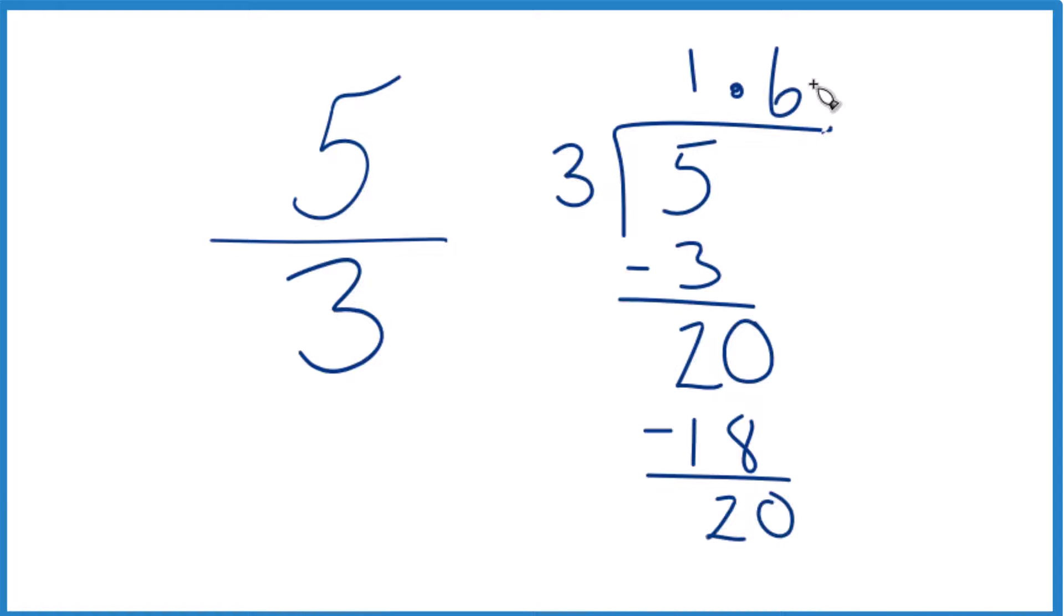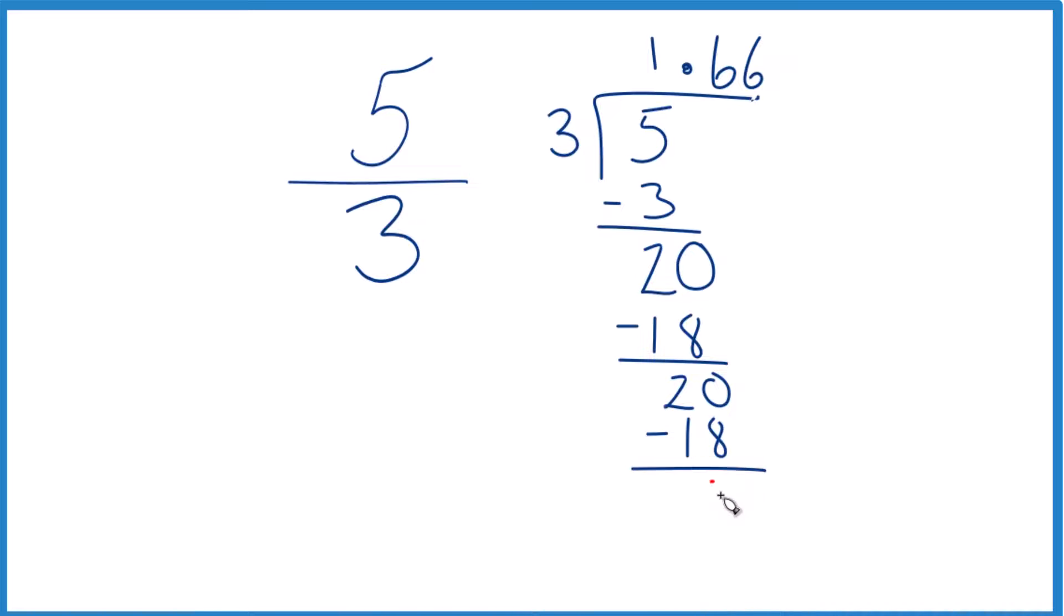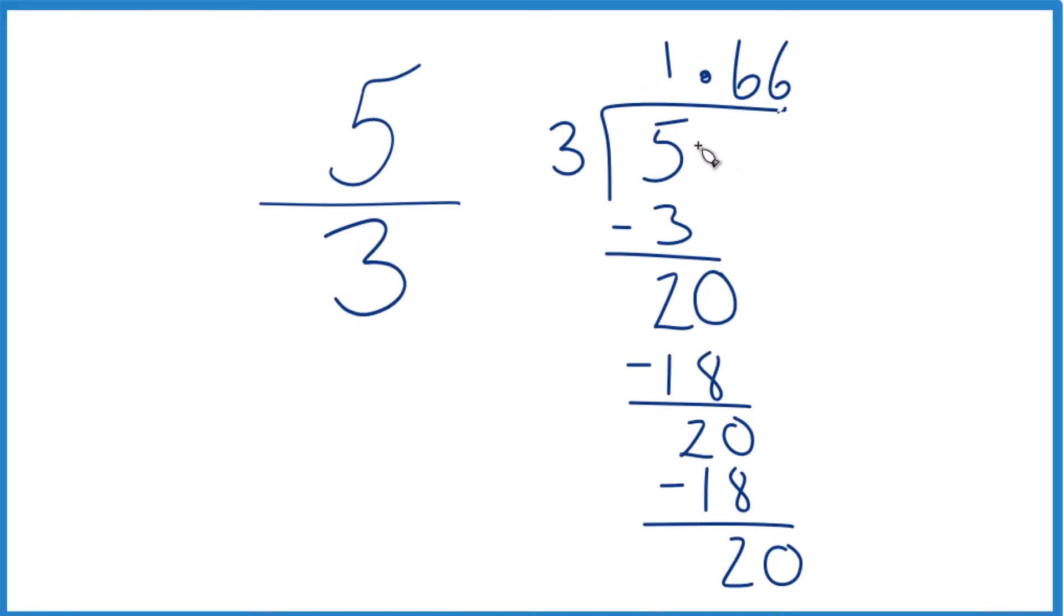Well, 3 times 6, we said that was 18, that would work. So we put that in, subtract and we get 2, move over 1, call it 20. And you can see the 6's, they just keep repeating.